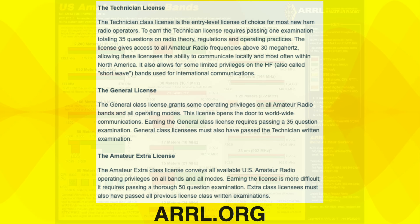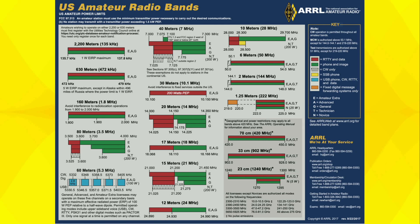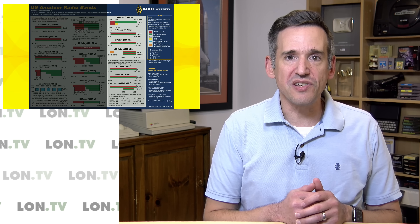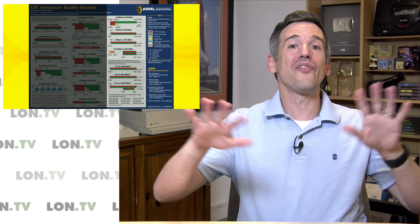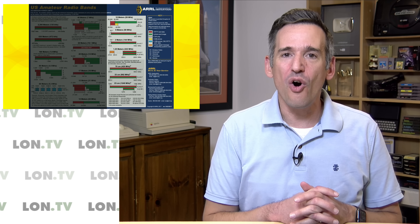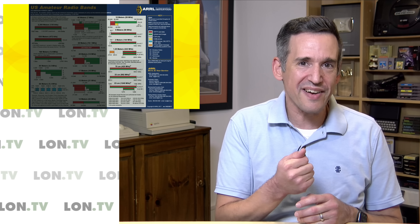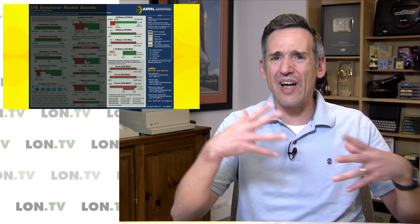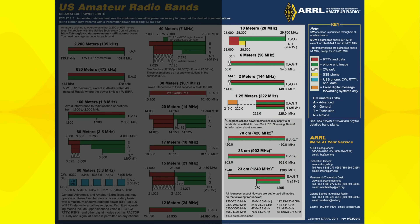Let's start off with why I upgraded from the technician license to general. If you take a look at the ARRL band chart here, you'll see that a lot of the amateur frequencies are off limits to technician license holders, but you can do quite a bit with a technician license. In fact, if you go into my playlist, you can see all the different things I've been doing over the last year — that includes talking to people, communicating via the space station, and doing a lot of local data transfers.